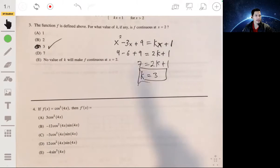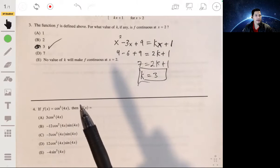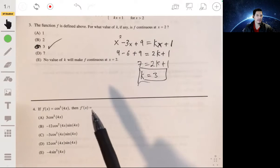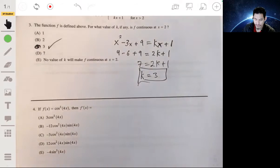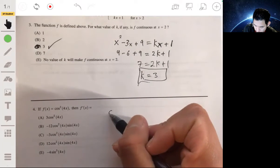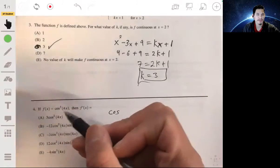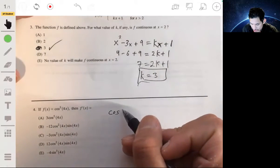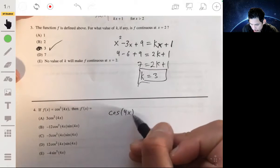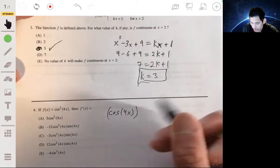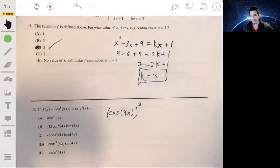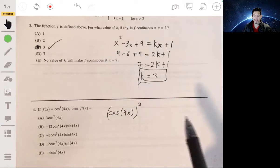Problem four, if f of x equals the cosine of 4x all to the third power, then f prime of x equals. This is an example where we have to use chain rule. For the trig functions, they have a special way of writing their powers. So this is actually the same as putting this entire group in parentheses all to the third power. You have three functions here: the cube function, the cosine function, and the 4x function.